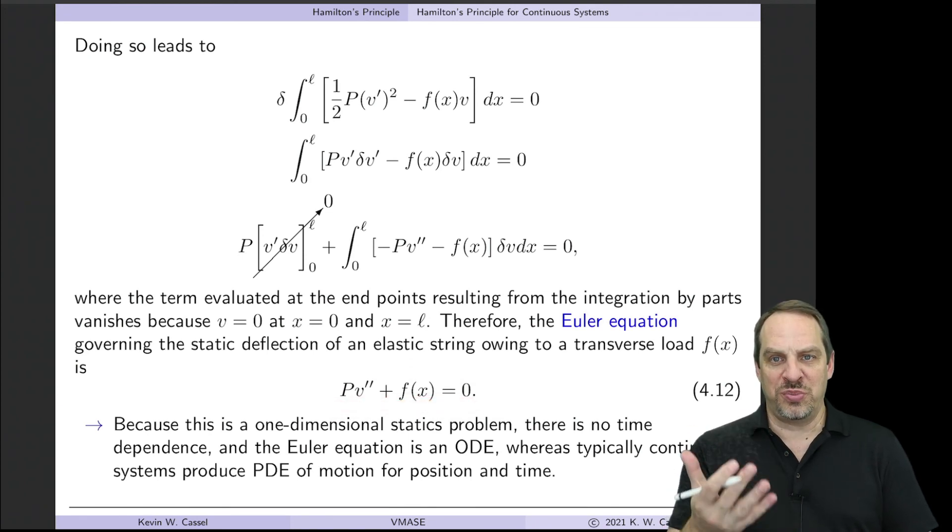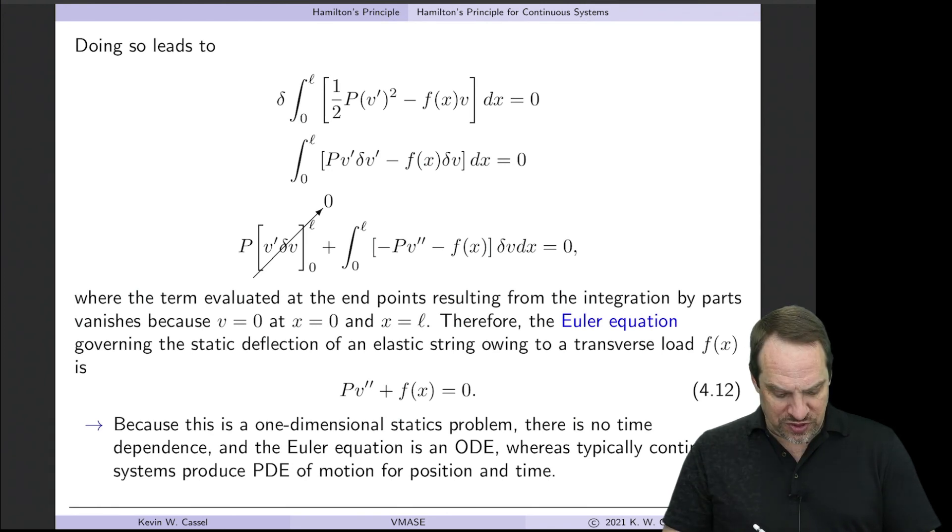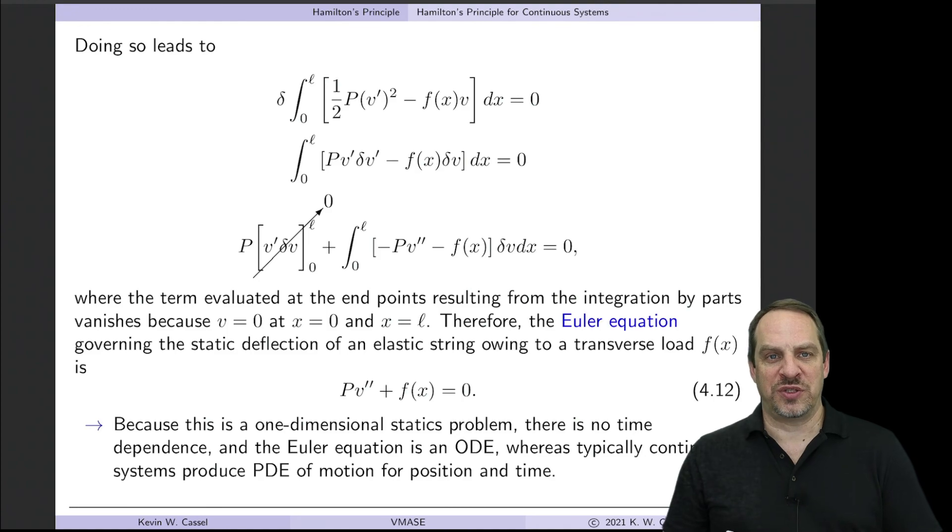You'll notice that it's an ordinary differential equation. Normally it would be a partial differential equation. But in this case, because it's static, it's not moving. It's not a function of time. It's only a function of X. So given the constant P, tension, and the distributed load F of X, we could integrate twice, put in the boundary conditions to get the V as a function of X displacement function.